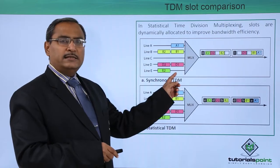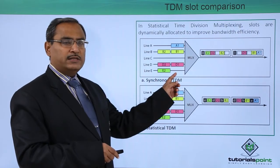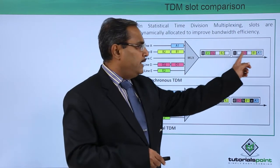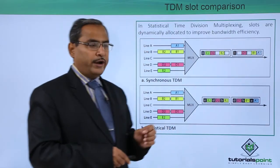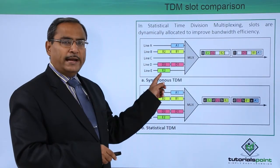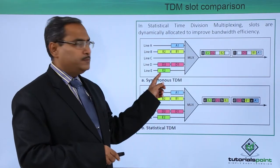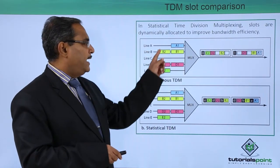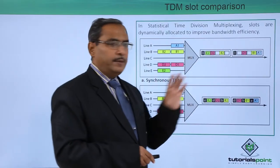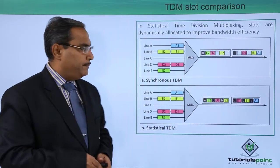In the first frame, the lines not transmitting are C and E — C and E are void. In the second frame, the lines not transmitting are A and C — A and C have been void.